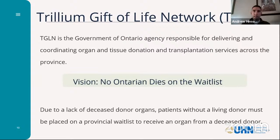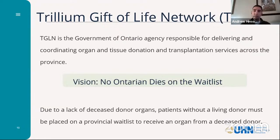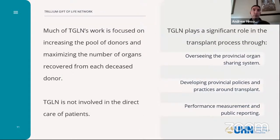Thank you to Paula for allowing me to be part of today's webinar. As Paula mentioned, I am with Trillium Gift of Life Network. TGLN is the Government of Ontario agency responsible for delivering and coordinating organ and tissue donation and transplantation services across the province. Our vision is that no Ontario resident dies on the waitlist. Unfortunately, due to a lack of deceased donor organs, patients who do not have a living donor must be placed on a waitlist. Much of TGLN's work is focused on increasing the pool of donors and maximizing the number of organs recovered from a deceased donor.